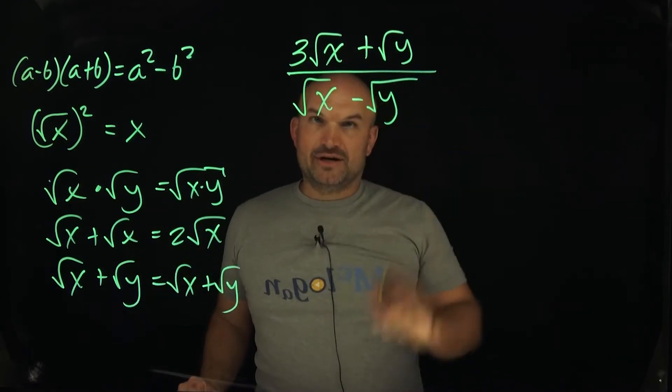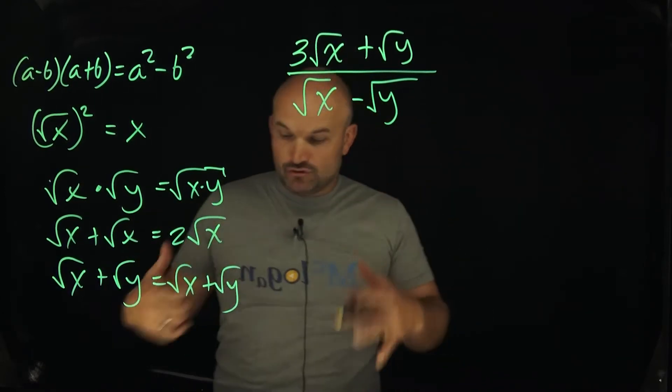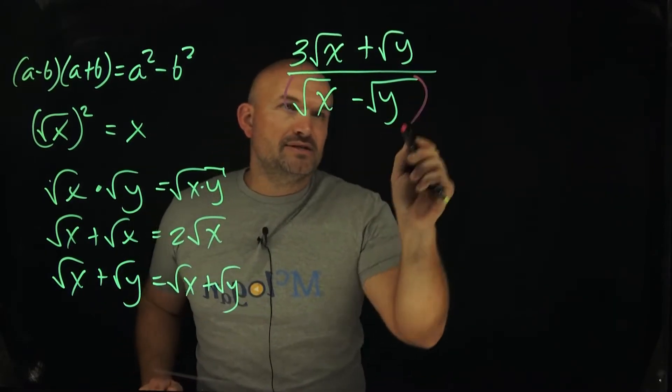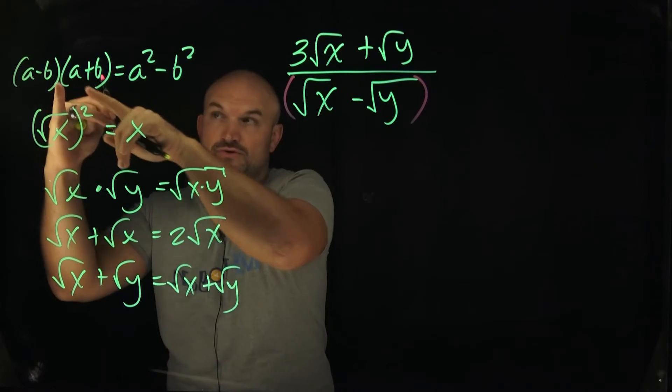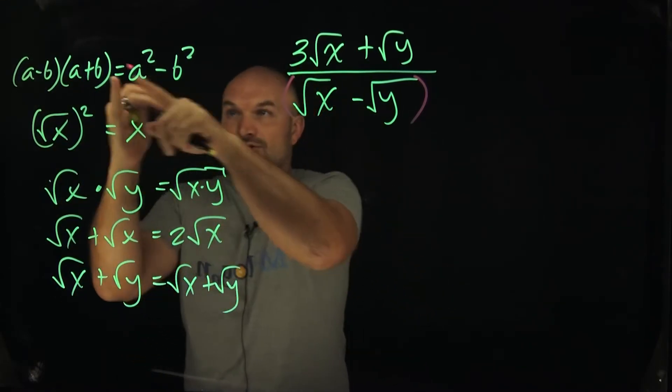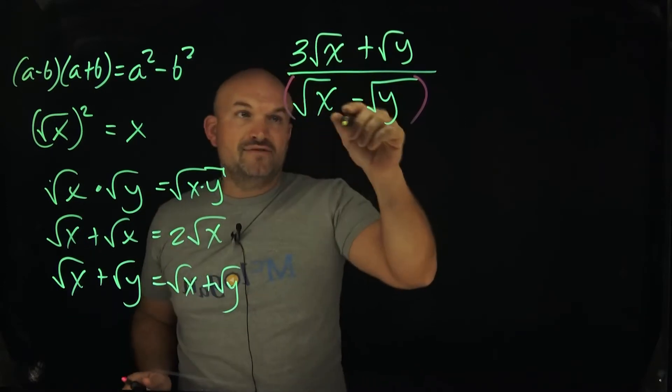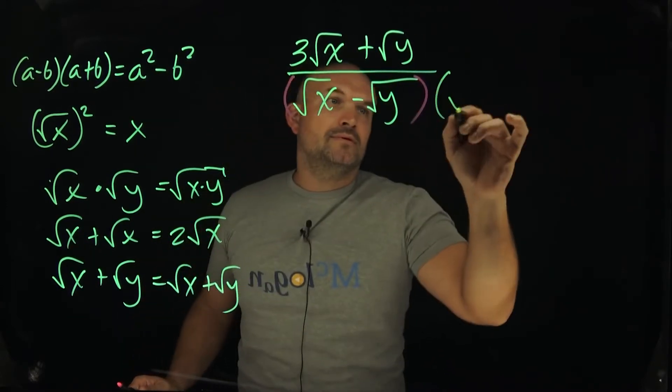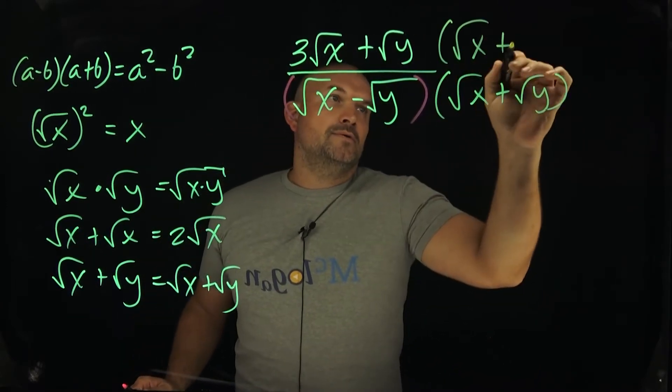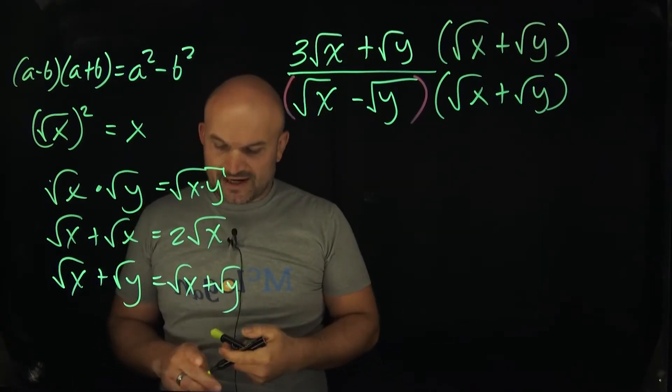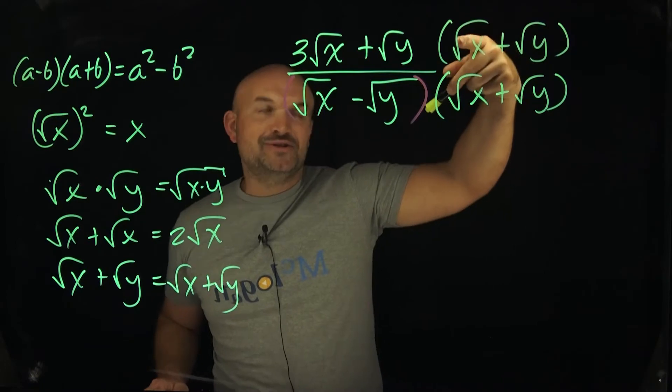We want to rationalize the denominator of this thing. So what we want to do is create the difference of two squares. I'm going to put these in parentheses. If this is one part of the difference of two squares, what do I need to multiply this by to achieve the difference of two squares? Well, hopefully you recognize that's going to be the square root of x plus the square root of y. Now, and if you're in my class, then you would have heard this over and over again. Whatever you do in the denominator, you have to make sure you do in the numerator.